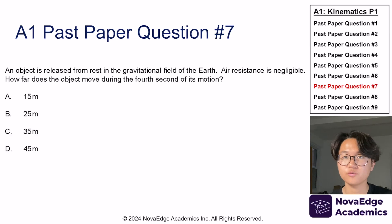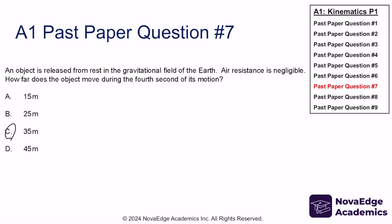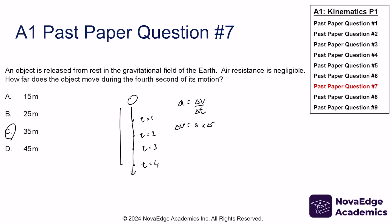Now if you chose C, then you are correct. This is a tricky problem — many students get it wrong and put D. When they say the fourth second, we want the ball traveling between t equals 3 and t equals 4. At t equals 4, the velocity is about 40 meters per second. At t equals 3, it's 30 meters per second. On average between t equals 3 and 4, the ball is traveling at 35 meters per second. So within that one-second time frame, it travels 35 meters.